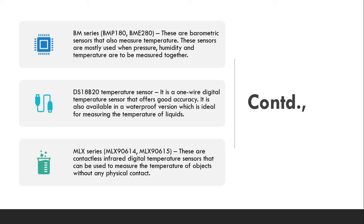The next one is MLX series: MLX90614, MLX90615. These two are the contactless infrared digital temperature sensors. I repeat, they are contactless infrared digital temperature sensors which can be used to measure the temperature of objects without any physical contact. This is what I told you, there are two basic classifications: one is contact-based, another one is contactless, and MLX series is contactless.